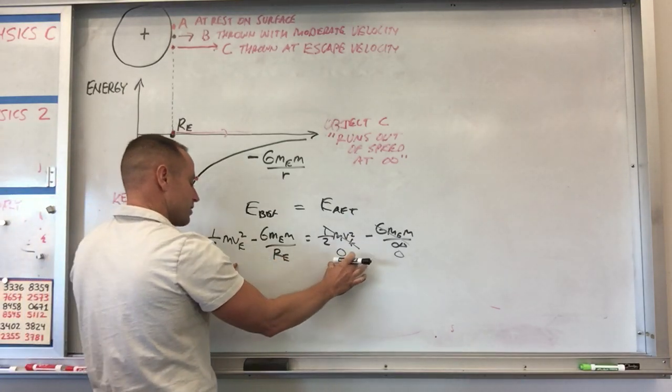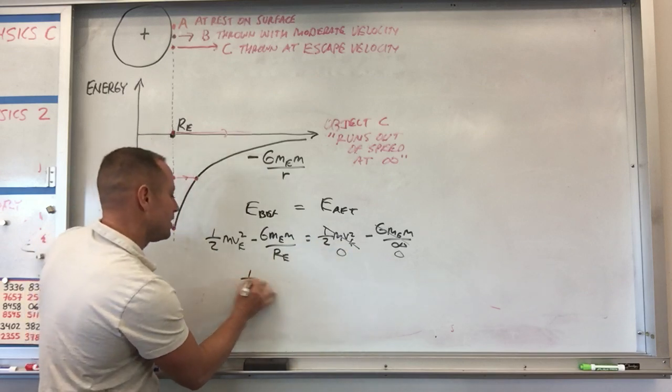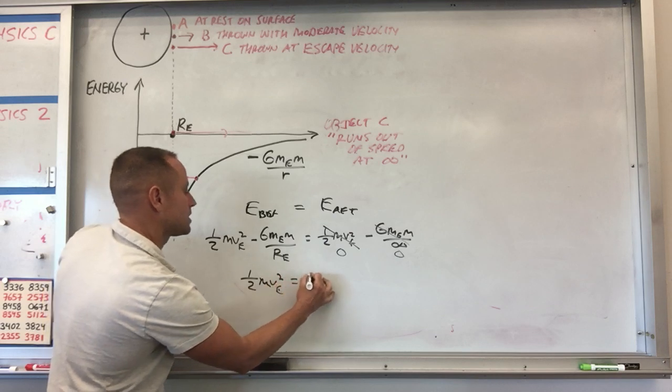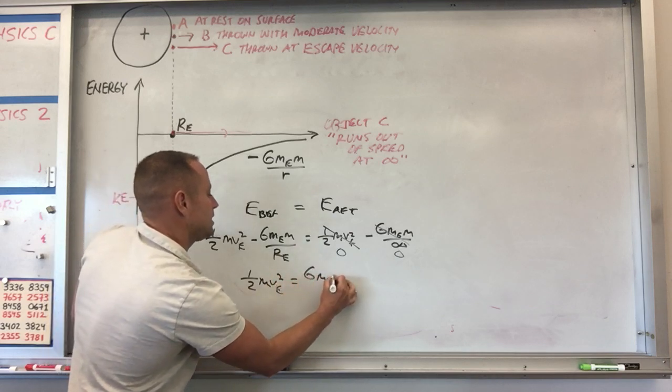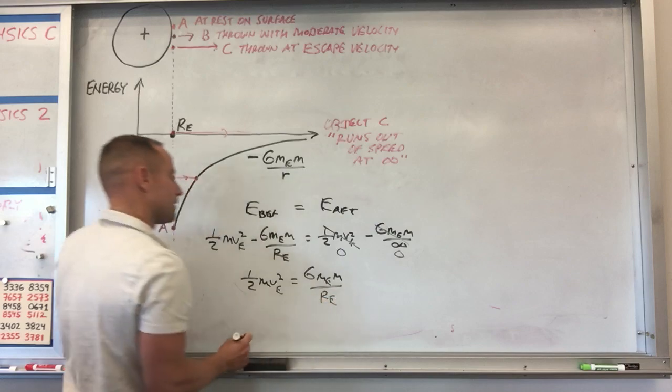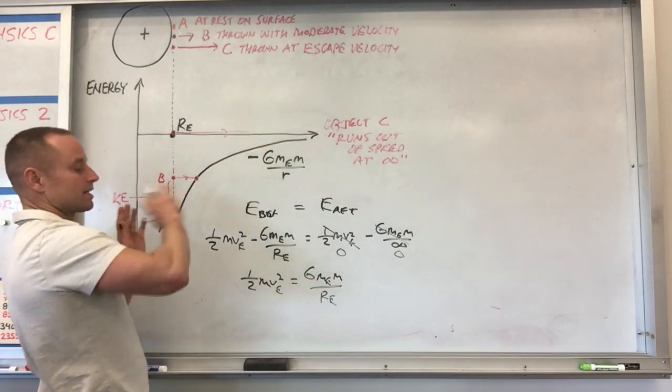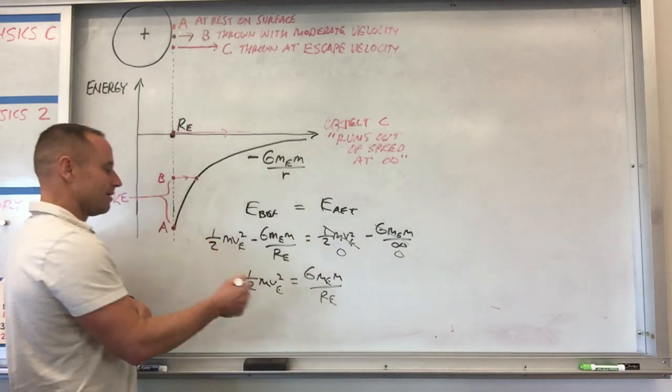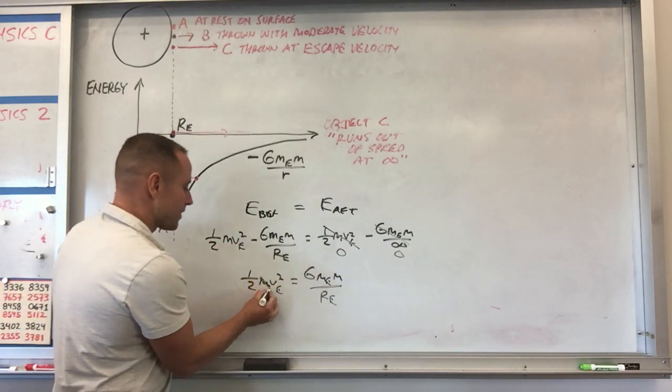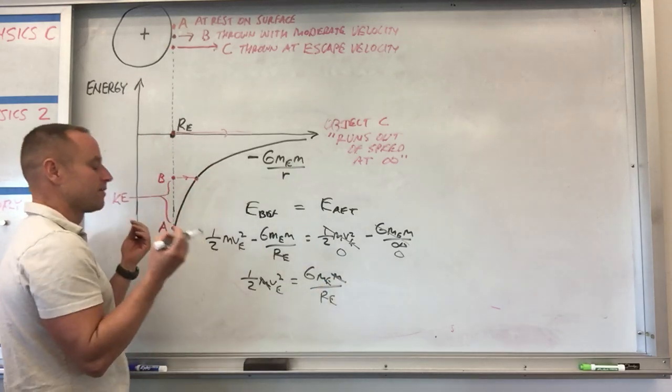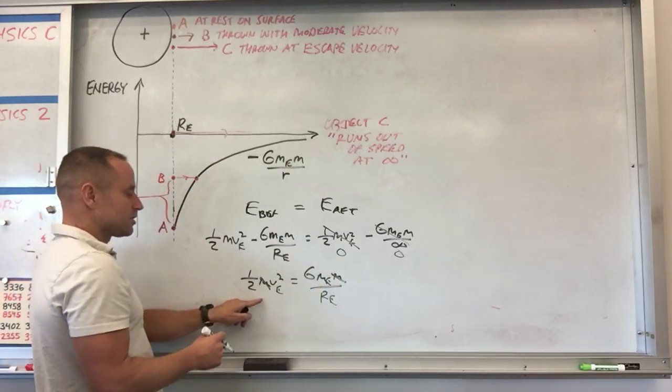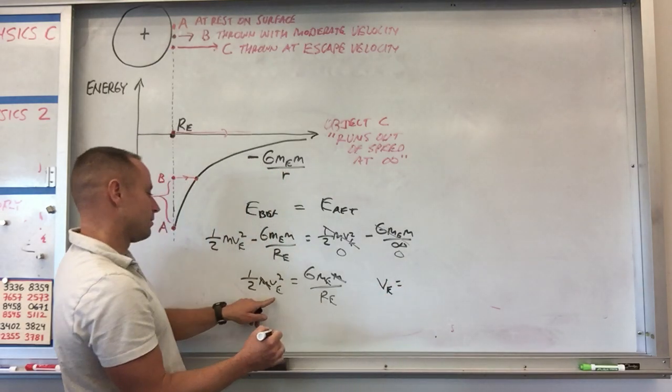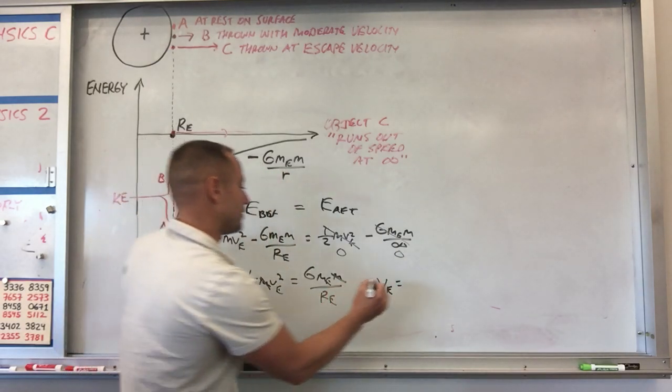So just to wrap this up, we'd have 1/2 m v_escape squared equals GMₑm over radius of the Earth. Looks like the mass of the object will cancel out. So it doesn't matter whether you throw a paperclip, or whether you throw a baseball or a rocket, whatever the object is, that's going to cancel out. So there's just a given escape velocity. And you see, you just bring the two to the other side. So finally, you get v_escape equals √(2GMₑ/Rₑ).